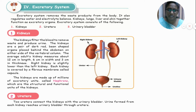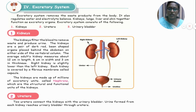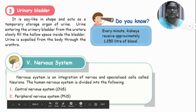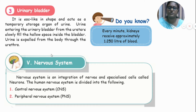The ureter is a small tube-like structure coming out from the kidney that leads to the urinary bladder. The urinary bladder is a bag-like structure that collects all the urine. Urine formed from each kidney reaches the urinary bladder through the ureter. The urinary bladder is sac-like in shape and acts as a temporary storage organ for urine. Urine is expelled from the body through the urethra. Did you know every minute the kidney receives approximately 1.25 liters of blood?